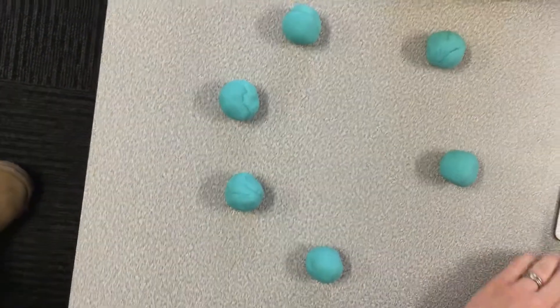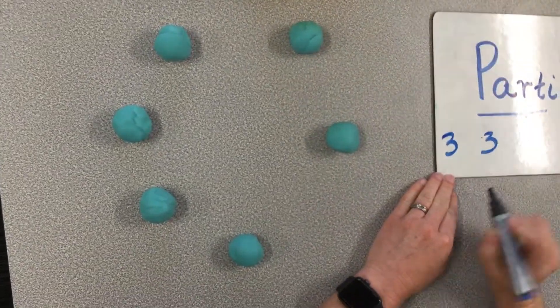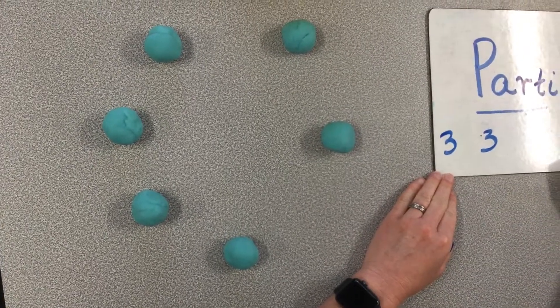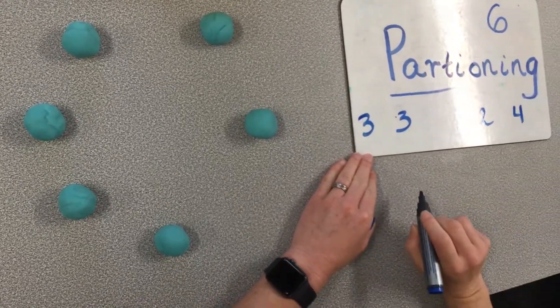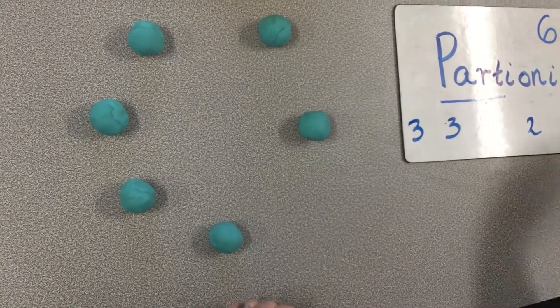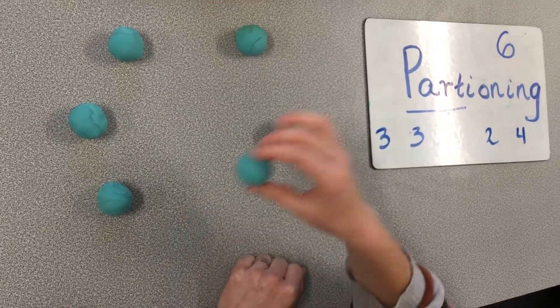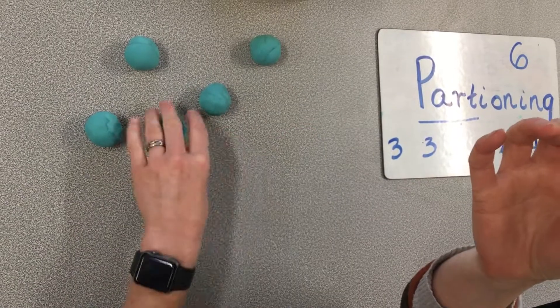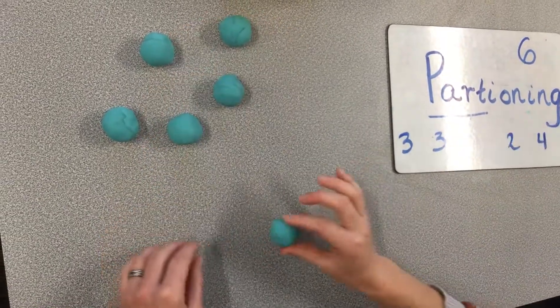At the moment, we've got three and three. And then we found two and four. And I wonder if there's another way that we could do it. What if I had this little ball all on his own and put all of these together? I wonder what would happen there.